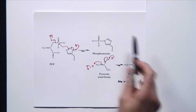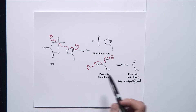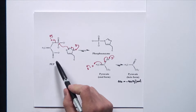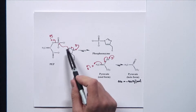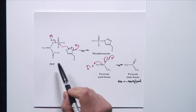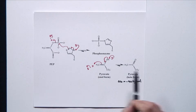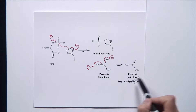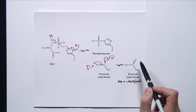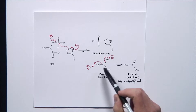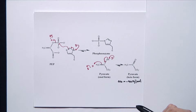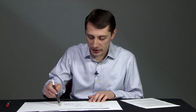That means the overall transformation going from PEP and our histidine in the active site is going to be strongly driven to the right because of this keto-enol equilibrium. Therefore, the entire process is expected to be thermodynamically very favorable.